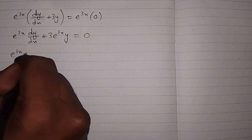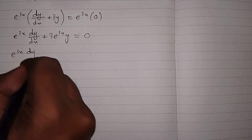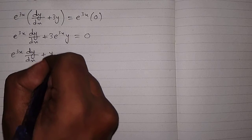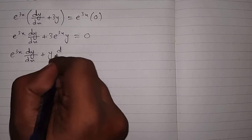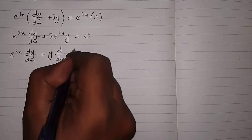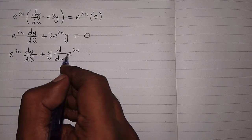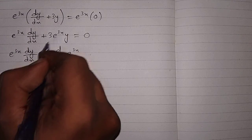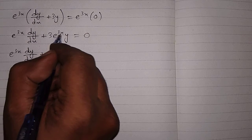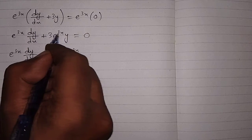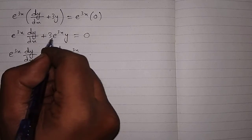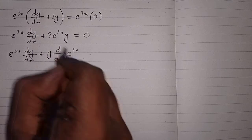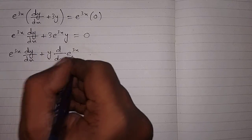Now this can be written as e to the power 3x times dy/dx plus y times the derivative of e to the power 3x, because the derivative of e to the power 3x is e to the power 3x multiplied by 3. So we can write d/dx of e to the power 3x in place of 3 times e to the power 3x.